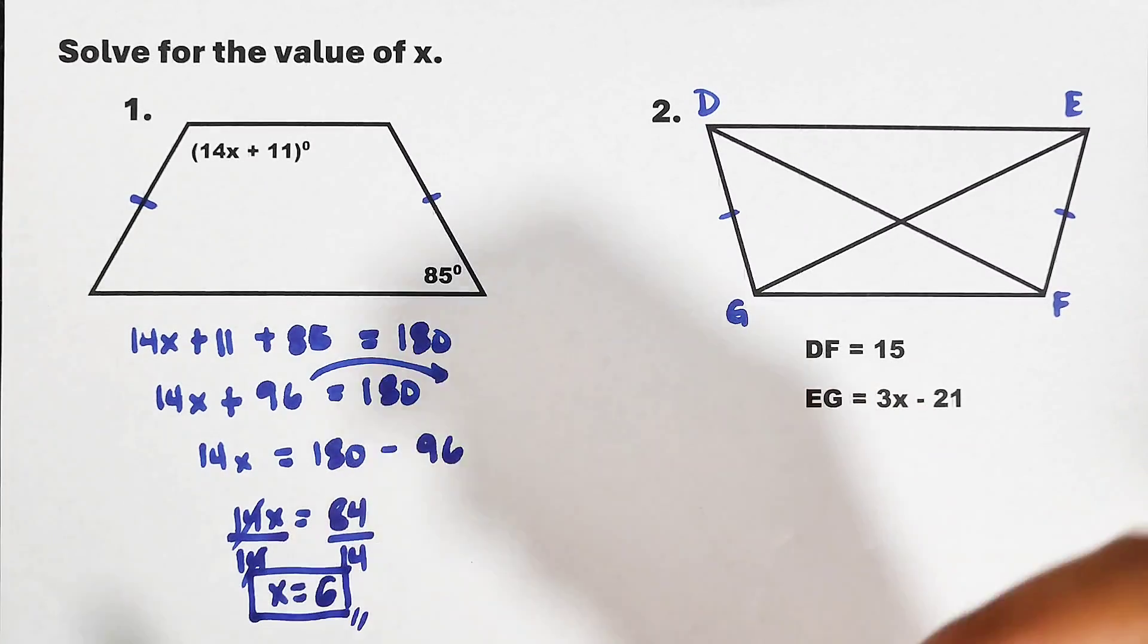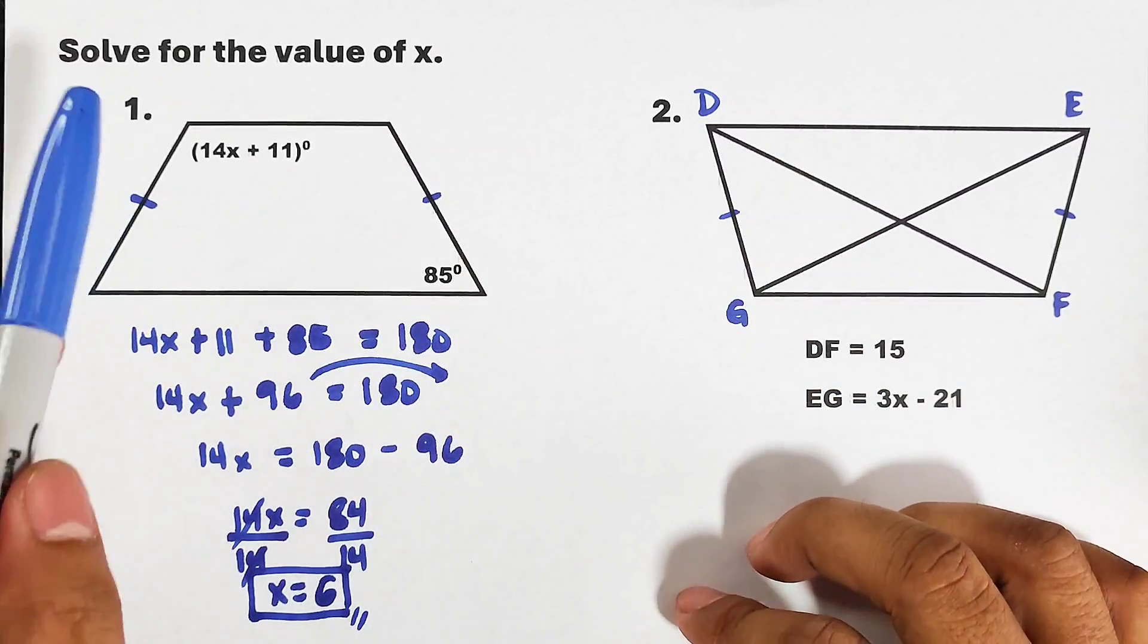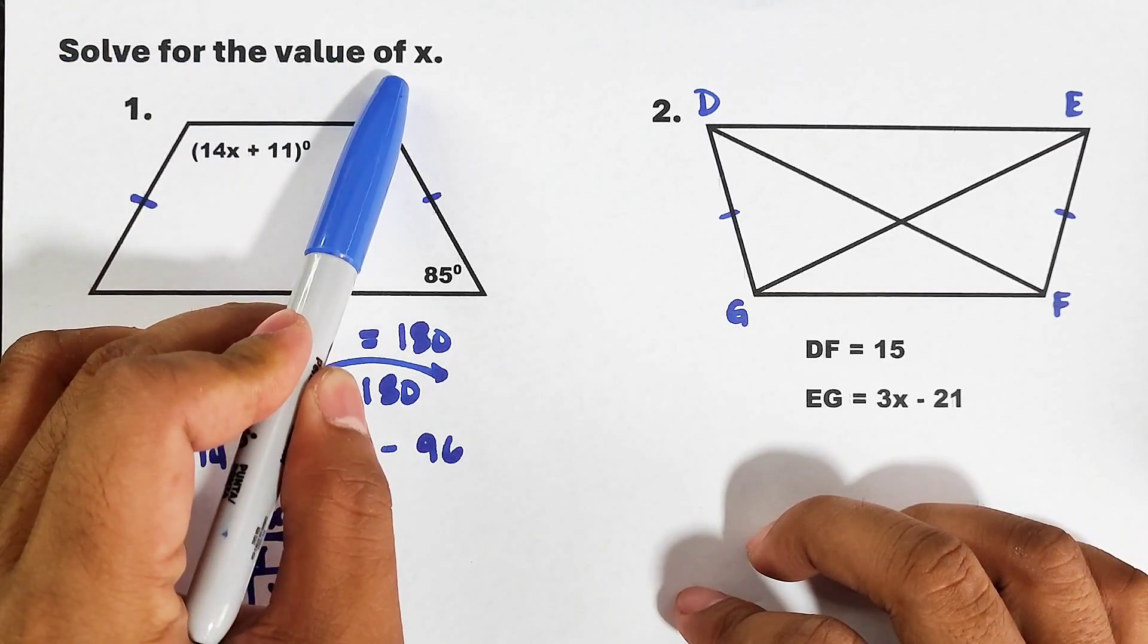As you can see, your x equals 84 divided by 14, which is equal to 6. Now this is our answer. As you can see, all we need to do here is find the value of x because it says in our direction, solve for the value of x.